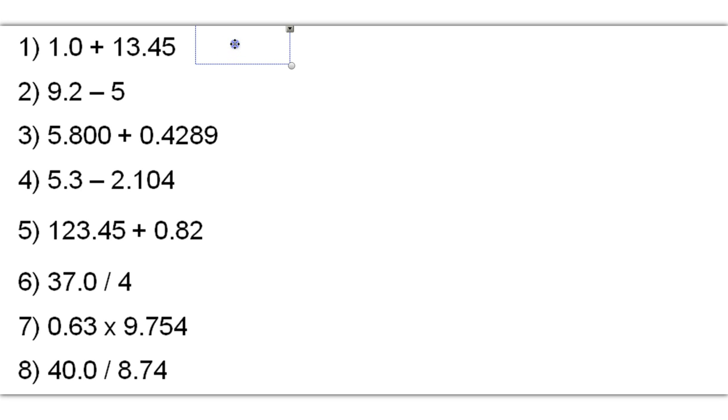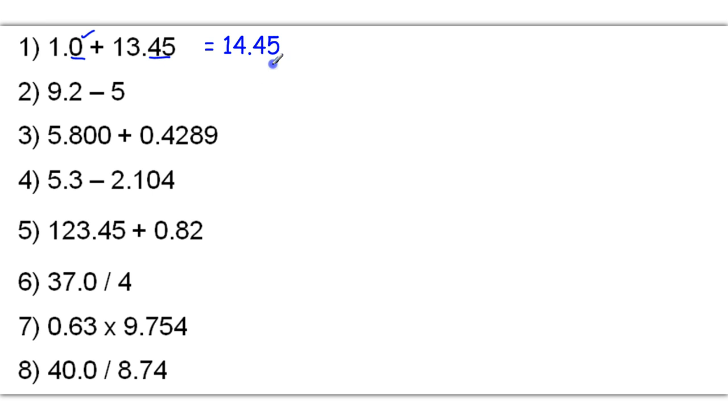Here are several examples. First, when we add 1.0 plus 13.45, we get 14.45 as the raw answer. However, rounded off, we want to look at the least decimal places. This number has only one, this number has two. So we're going to have one decimal place. We're rounding here — this is 14.4 followed by a dead even 5, which means I need to make sure 4 remains even so it does not round up. It stays the same, and so there's our final answer.